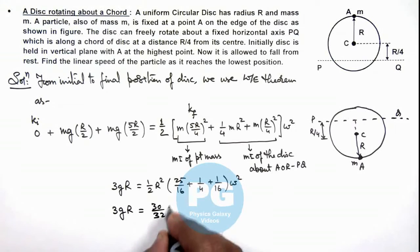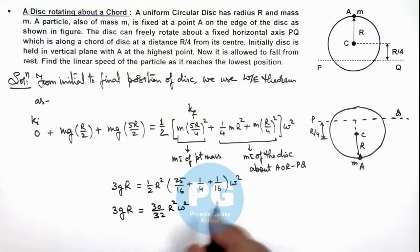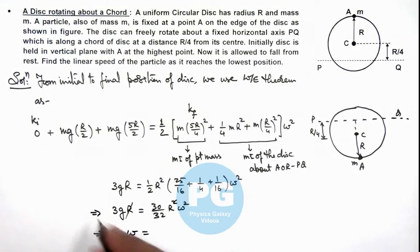So here when R gets cancelled out, in this situation the value of omega we are getting is, this giving us the value of omega as root of 16g by 5R.